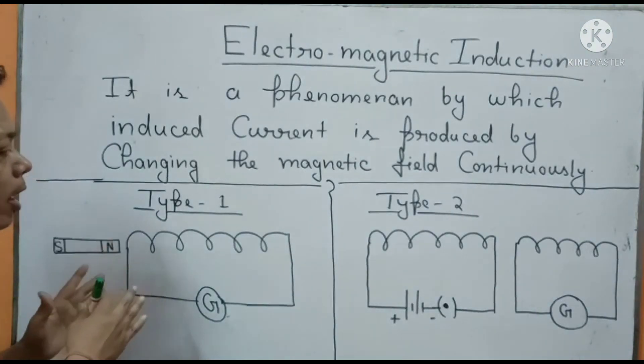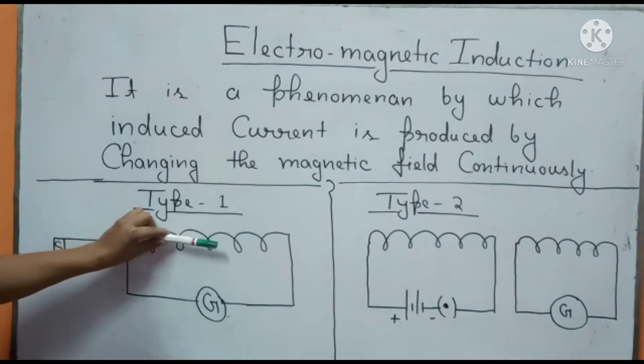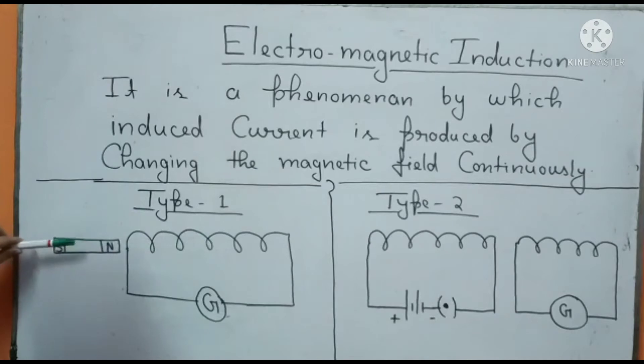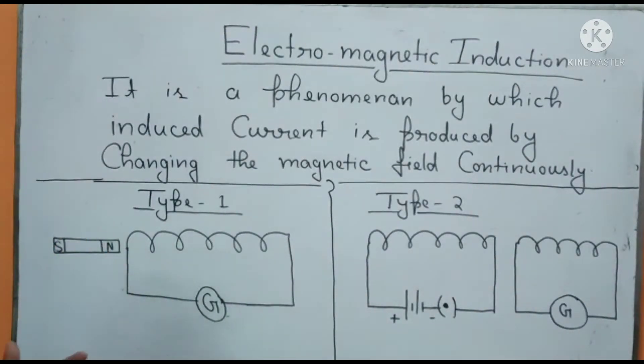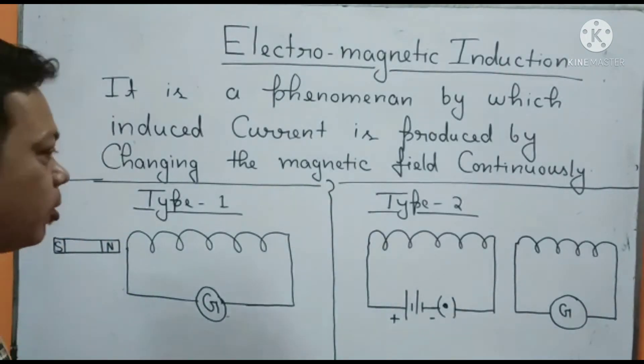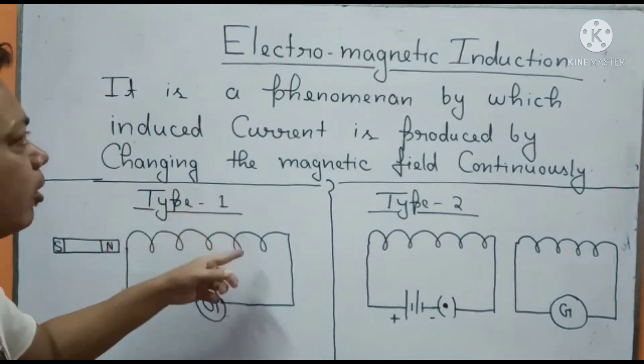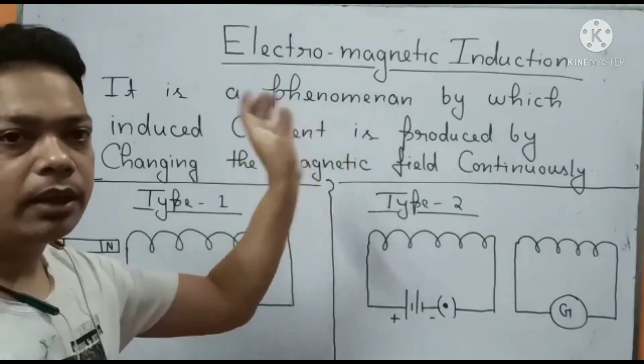Ultimately what you are doing by inserting the magnet into the coil and taking it out, you are changing the magnetic field. The current produced by this process is called induced current, and this entire phenomenon is called electromagnetic induction.